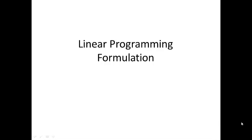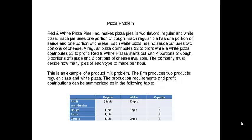Here's an example. Red and White Pizza Pies makes pizza pies in two flavors: regular and white pizza. Each pie uses one portion of dough. Each regular pie has one portion of sauce and one portion of cheese. Each white pizza has no sauce but uses two portions of cheese. A regular pizza contributes two dollars to profit while a white pizza contributes three dollars to profit. Red and White Pizzas starts out with four portions of dough, three portions of sauce, and six portions of cheese available.